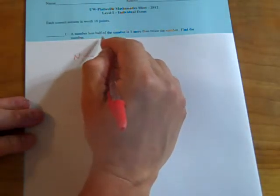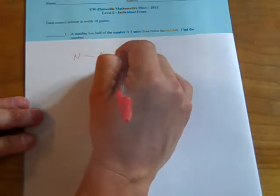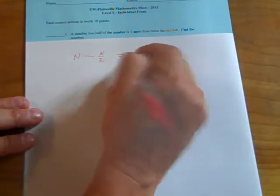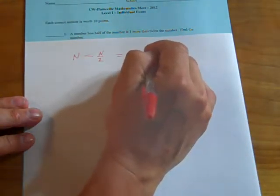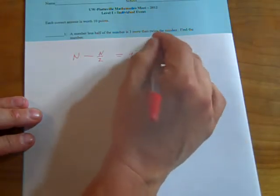A number less half the number is, the is is equal, 3 more plus 3, then, as always plus, twice the number.